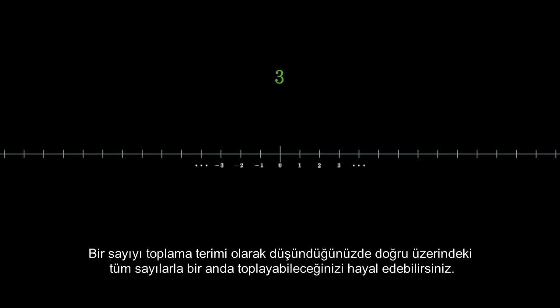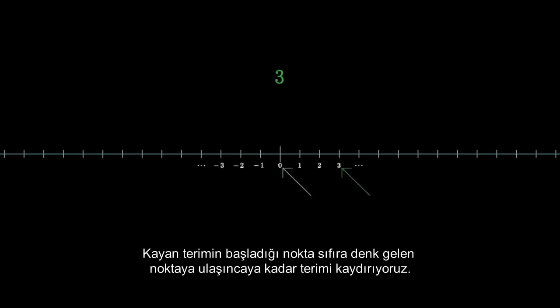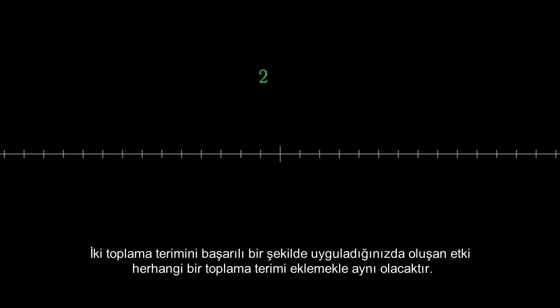When you think about a number as an adder, you could imagine adding it with all numbers as points on the line all at once. But forget that you already know anything about addition so that we can reframe how you think about it. Think of adders purely as sliding the line with the following rule: you slide until the point corresponding to zero ends up where the point corresponding with the adder itself started. When you successively apply two adders, the effect will be the same as just applying some other adder — this is how we define their sum.